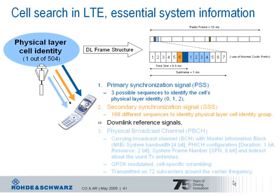In contrast to the synchronization signals, the physical broadcast channel is transmitted on the 72 subcarriers around the unused DC subcarrier. In the master information block, the UE finds information about which system bandwidth is used in this cell: 1.4, 3, 5, 10, 15, or 20 MHz.